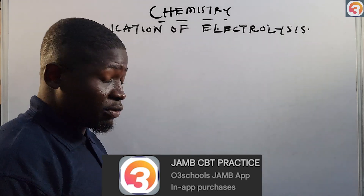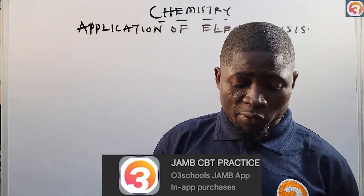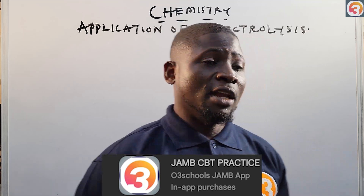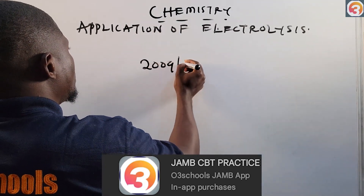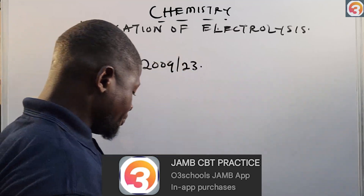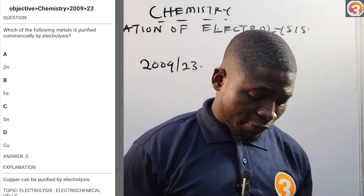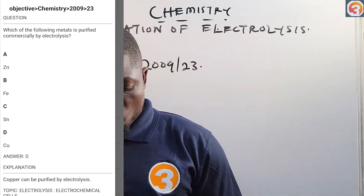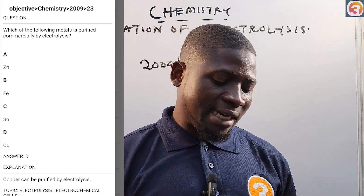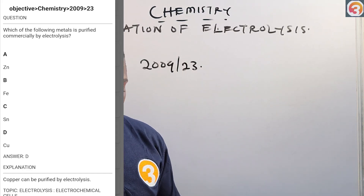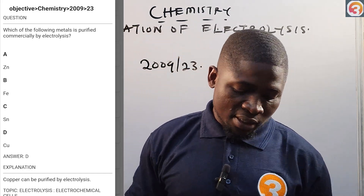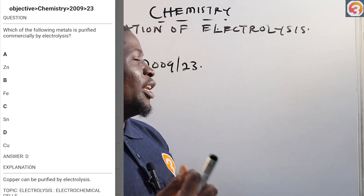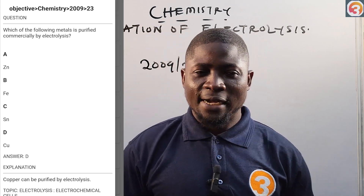Before we look at the applications, let's see a question from the OT Schools JAMB app — it's a 2009 question, number 23. It says: which of the following metals is purified commercially by electrolysis? The options are: A) zinc, B) iron, C) tin, D) copper.